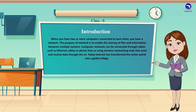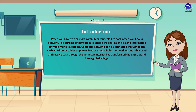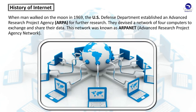When you have two or more computers connected to each other, you have a network. The purpose of a network is to enable the sharing of files and information between multiple systems. Computer networks can be connected through cables such as Ethernet cables or phone lines, or using wireless networking that sends and receives data through the air. Today, the Internet has transformed the entire world into a global village.